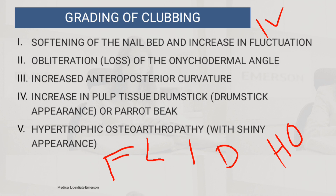If you want to use the grading system that ends at four, simply remove the hypertrophic osteoarthropathy stage. So it ends at drumstick appearance: fluctuation of nail bed, loss of Lovibond angle, increased curvature, drumstick appearance. The system ending at five includes hypertrophic osteoarthropathy as the final grade.